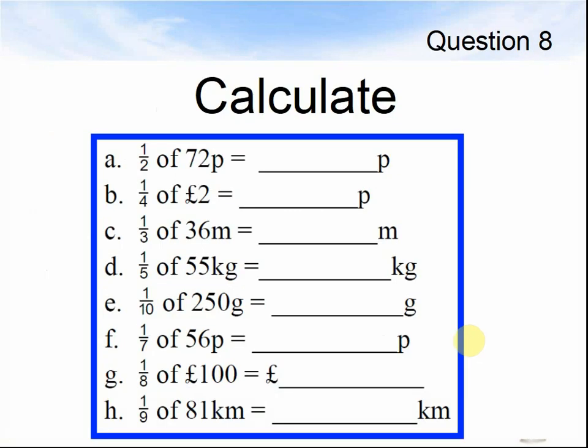Question 8. Calculate: a. Half of 72 feet. b. Quarter of 2 pounds. c. A third of 36 metres. d. One-fifth of 55 kilograms. e. One-tenth of 250 grams. f. One-seventh of 56 feet. g. One-eighth of 100 pounds. h. One-ninth of 81 kilometres. Pause the video until you are ready to see the answers.